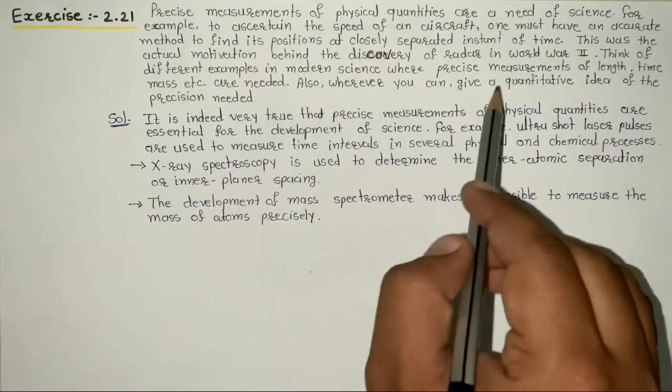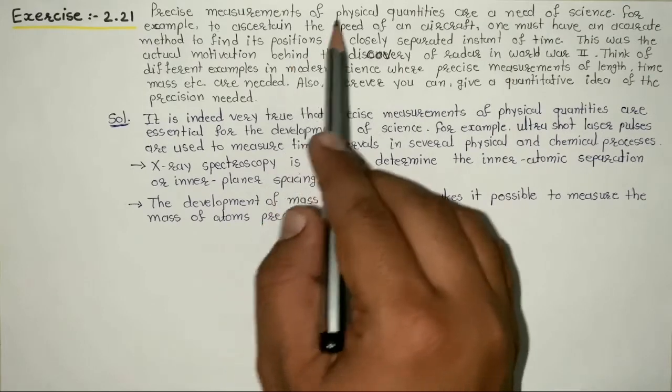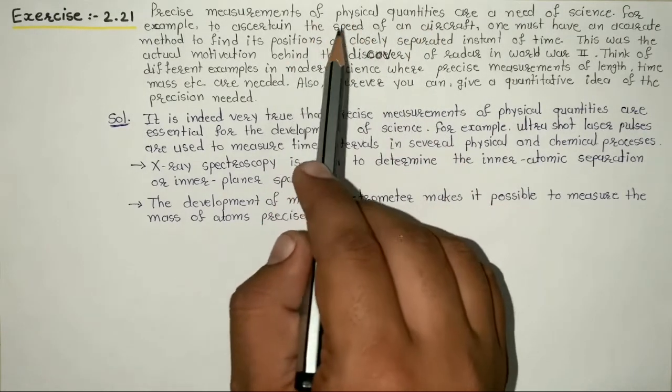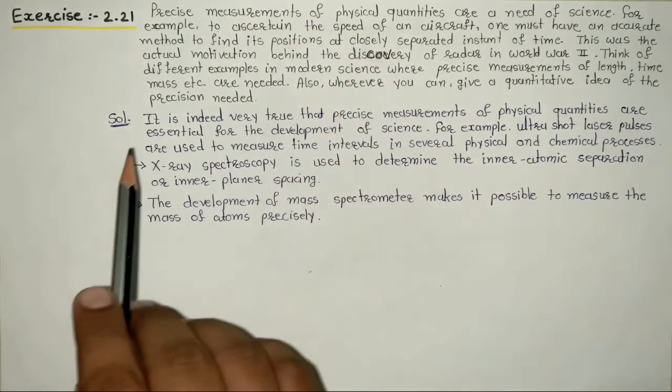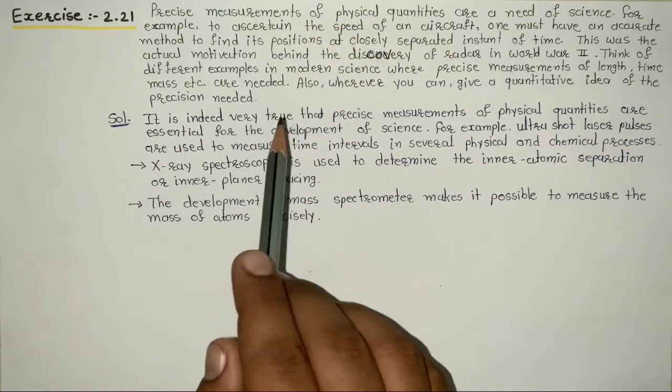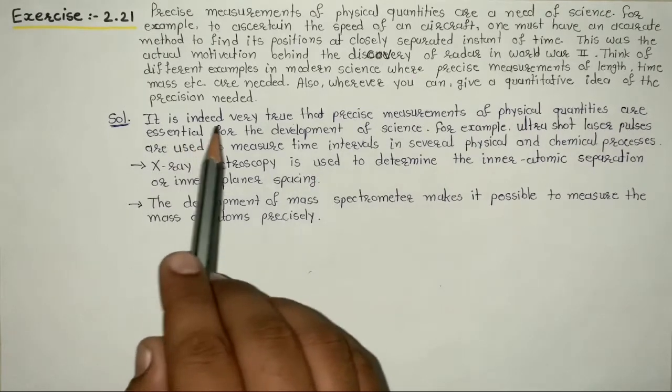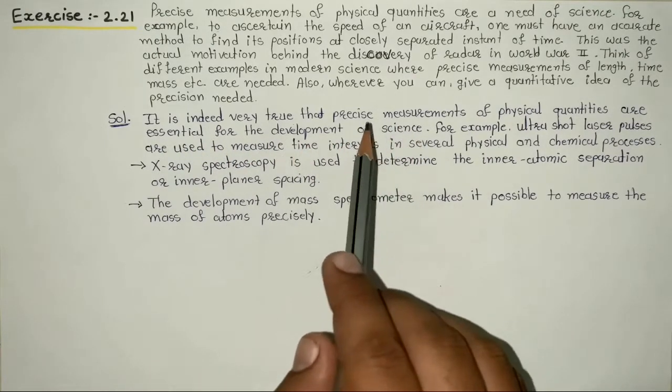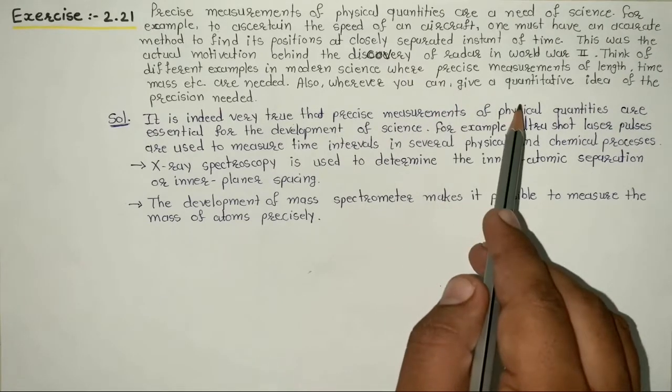Here we have some examples where physical quantity of precise measurement required. It is indeed very true that precise measurement of physical quantity are essential for the development of science.